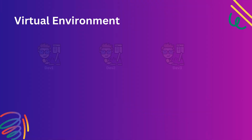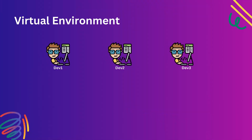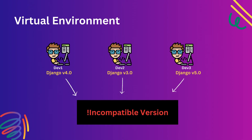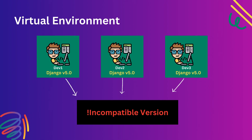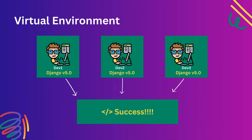Let's take another example. Two or three developers are working on the same project in parallel. They may install different versions of Django, and when you collate all their work, you might end up with a lot of version conflict issues. To avoid this, you create a virtual environment, install the required Python libraries inside it, and share it with all developers. This way, when you collate the work, there will be no version issues. That is the advantage of virtual environments.